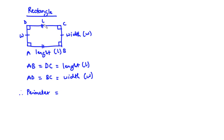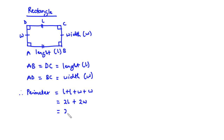The perimeter is going to be L plus L plus W plus W. We can simplify: L plus L gives 2L, and W plus W gives 2W. We can factor out 2, so we have 2 times (L plus W). This is the perimeter of the rectangle.